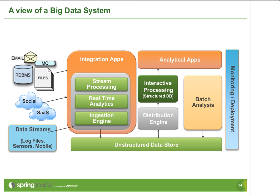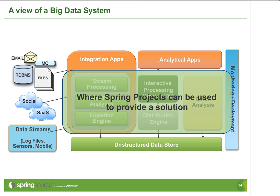Once you have data inside HDFS, you extract meaningful information by writing a MapReduce application as a batch job. The batch analysis occurs, and results are placed in a directory structure inside HDFS. Those results are usually then taken out of HDFS and imported into some structured database — MySQL, MongoDB, or R files for statistical software. That information is then presented to apps that end users interact with. The Spring projects can help provide a solution in the middle, using Spring Integration, Spring Batch, and Spring Hadoop.